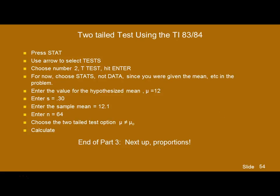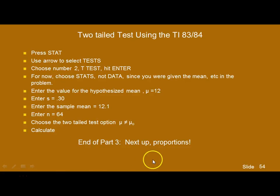To do this on your calculator, press the STAT button and go to TESTS. Choose number 2, the T-test, and hit enter. Again, choose STATS. Put in the hypothesized mean of 12, the sample standard deviation of 0.3, the sample mean of 12.1, and the sample size. Choose the two-tailed option and hit calculate. The calculator will give you both the P-value and the calculated T statistic. Remember, the calculator doesn't tell you how to set up your hypotheses or how to state your decision and conclusion. That's the end of part three — next up, we're going to learn how to test hypotheses about proportions.